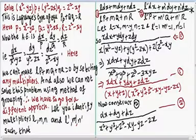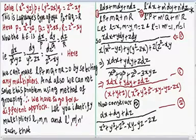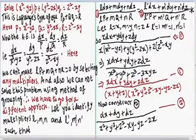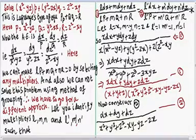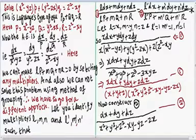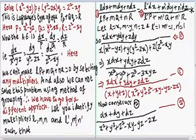You have to understand this step very clearly. We are not able to make L·P + m·Q + n·R = 0 by any multipliers, and we cannot use grouping, so we go for this different approach. Let L = x, m = y, n = z and L' = 1, m' = 1, n' = 1. Using L = x, m = y, n = z, let us form equation 1.